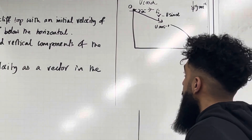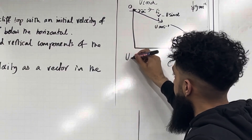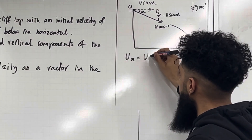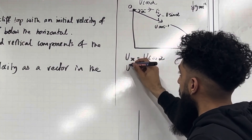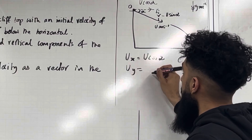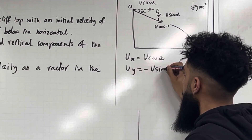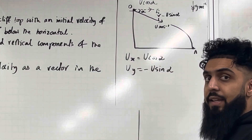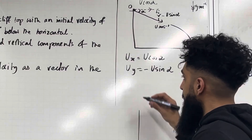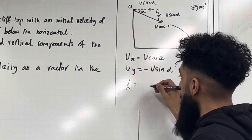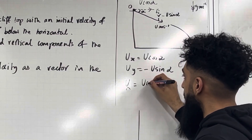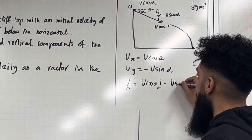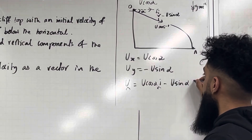So ux, the horizontal component, is u cos alpha, and uy, the vertical component, is minus u sin alpha. We can write the initial velocity as a vector: u = u cos alpha i minus u sin alpha j.